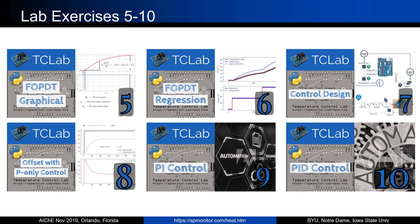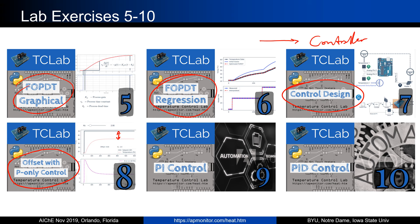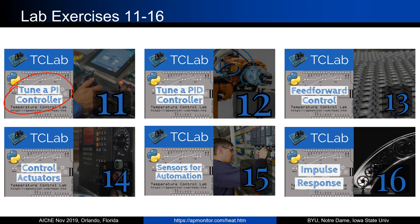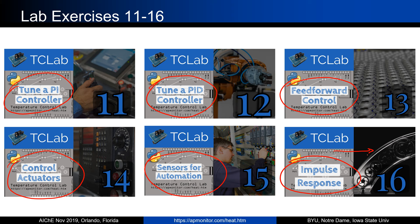Lab exercises five through ten cover empirical regression and controller design. We move into controllers: P-only control where students observe offset and calculate how much, then PI and PID control with tuning exercises iterating to tune the controller. We add feed-forward control and observe the improvement. Then a deep dive into the controller, actuator, and sensors — covering pulse width modulation of the transistor and how sensor signals are converted from voltages to degrees Celsius — followed by impulse response and additional modules.